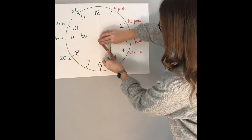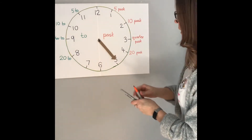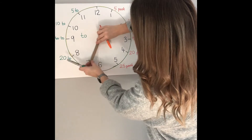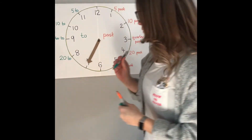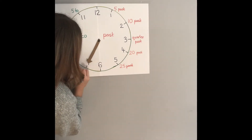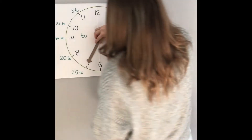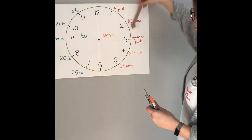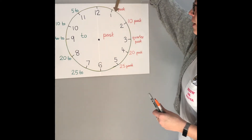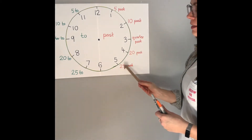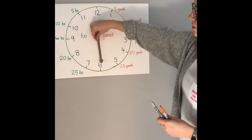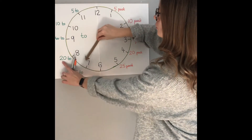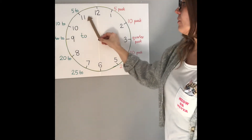Only two more to do. Counting round in fives: twenty past, twenty-five past. So then this one is going to be twenty-five to — twenty-five minutes to the next hour. And then hopefully you already know half past and o'clock. On the past side it counts up in fives: five past, ten past, quarter past, twenty past, twenty-five past, then half past which is thirty. But on the 'to' side it's counting backwards in fives: twenty-five to, twenty to, quarter to, ten to, five to, o'clock.